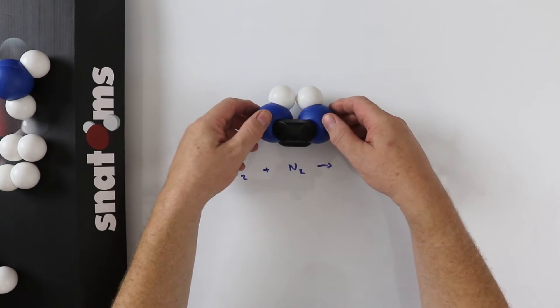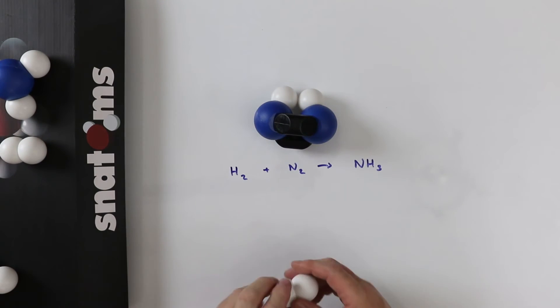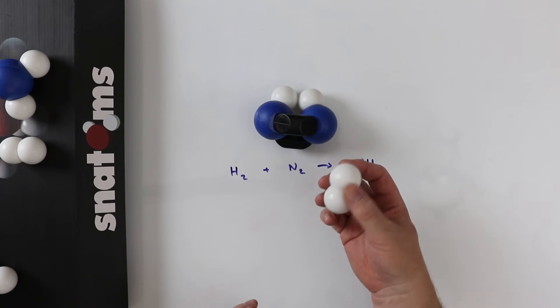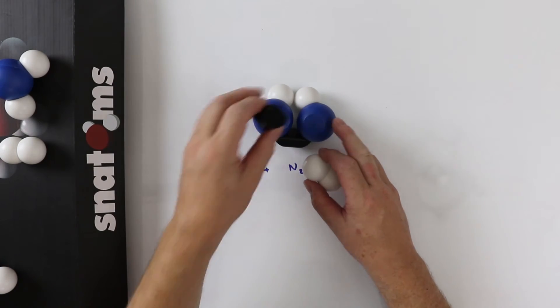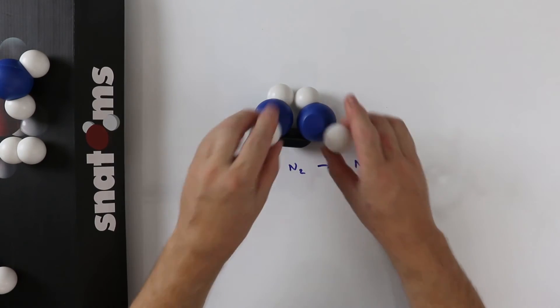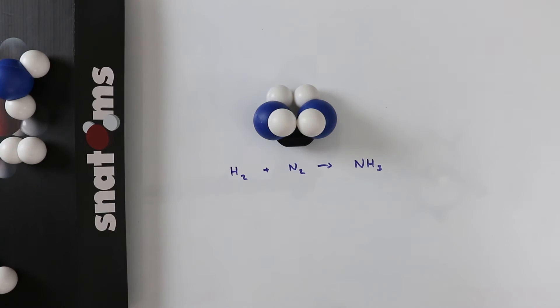We still need more hydrogen. A second hydrogen molecule here breaks another of the triple bonds. Two hydrogen molecules have now been used.